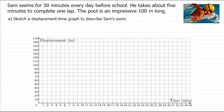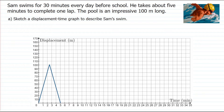Assuming he's moving at a constant rate, the first part of the graph shows two and a half minutes to travel 100 meters. Then in the next two and a half minutes he's traveling back to the starting position. By five minutes he's completed his first lap — 100 meters to the other end and 100 meters back to a displacement of zero. This pattern continues over and over: two and a half minutes to one side, two and a half minutes back.